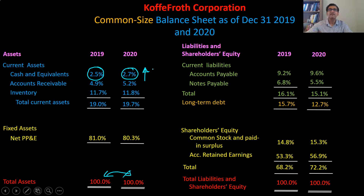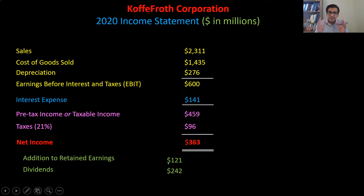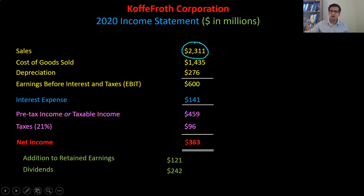Divide every line item on the balance sheet by the total assets and then do a comparison. The income statement works exactly the same way. Here's a stylized income statement — you have sales, cost of goods sold, and the rest. In the income statement, the driving force is the sales figure; it's the biggest number, just like total assets is the biggest number on the balance sheet.